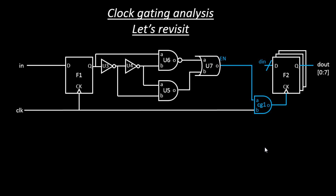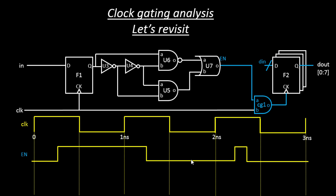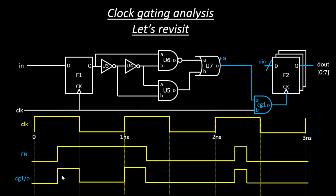Let's revisit the clock gating analysis. We started this analysis because of the enable signal arriving at the A pin — specifically the glitches. Let's say you have this clock signal and this enable signal. We didn't want this particular enable signal to create a false clock edge at the clock pin. If you compare this enable signal with the clock signal, the output at cg1/o is not a correct clock waveform to be used at the flip-flop clock pin.